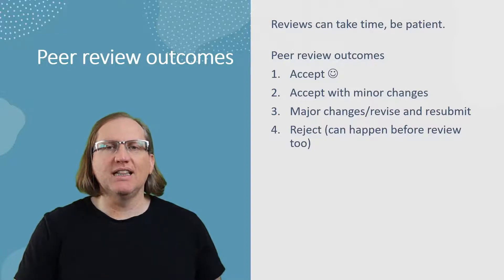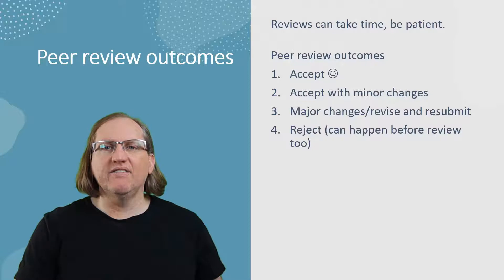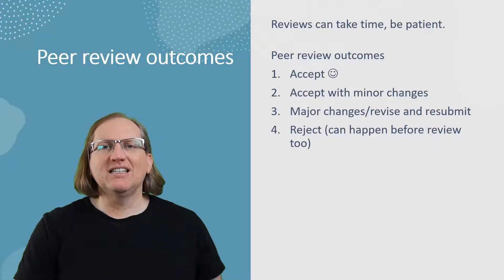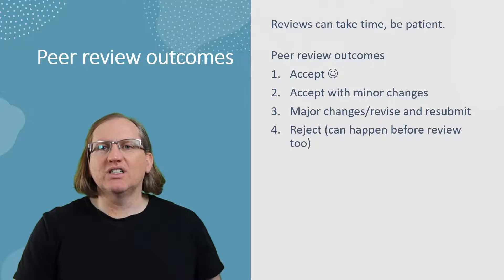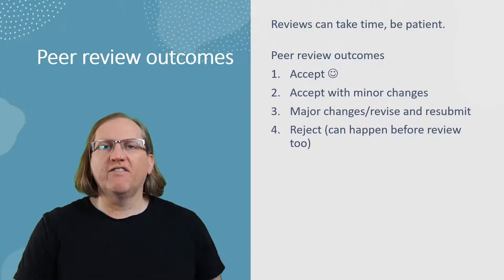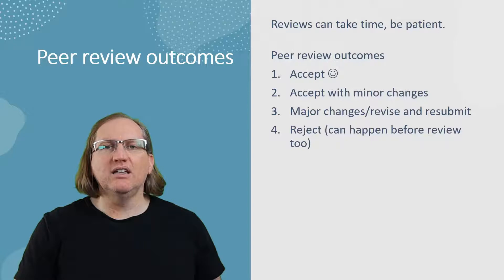There's also a possibility that you just get an outright rejection. The reject can happen even before the review — particularly for the very top-tier journals, an editor or one of the editor's staff will look at your article, and if they don't think it's suitable or that it fits, you'll just get a rejection straight away. With those, it's not at all a reflection of the quality of your article; it is just that it doesn't fit well with the journal.